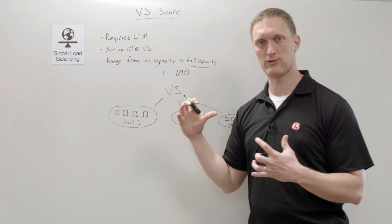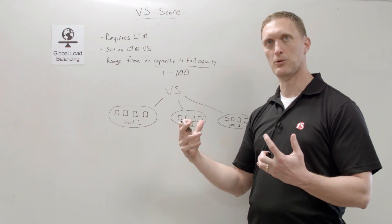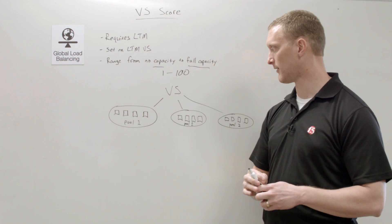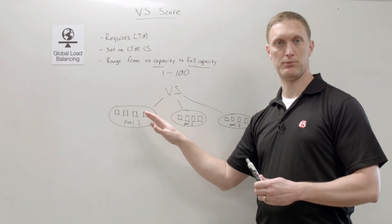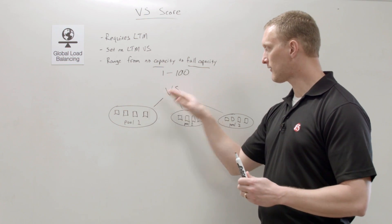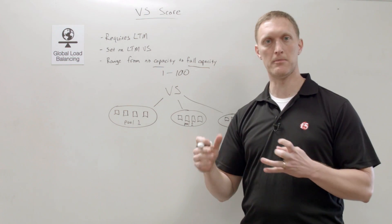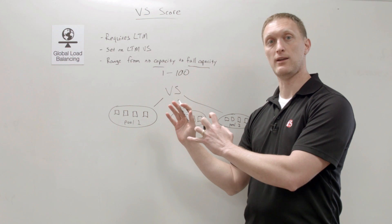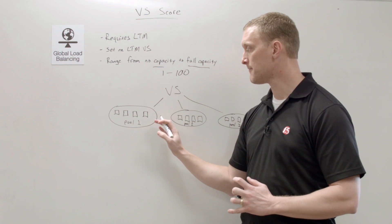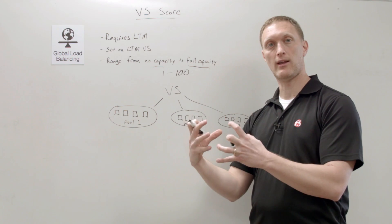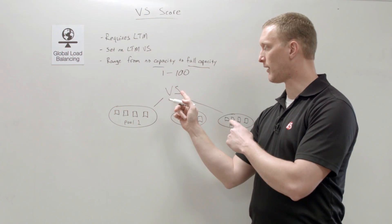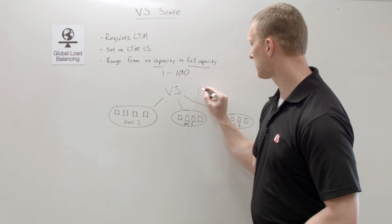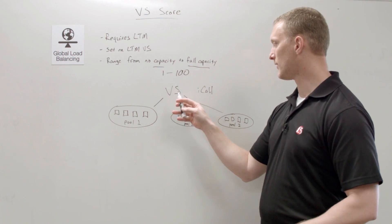Here's an example of when you'd use virtual server score. Let's say you have a virtual server with three pools attached — by an iRule or a policy — but there's no default pool. You want to know the virtual server capacity for each of these pools and turn that into a virtual server score. You could use an iCall script to calculate the capacity of each pool.